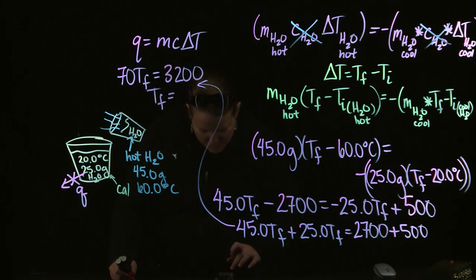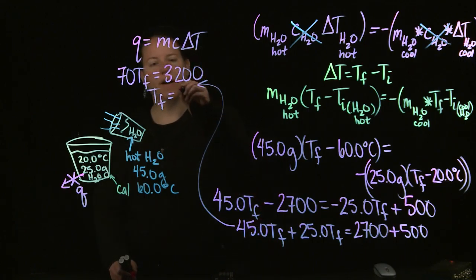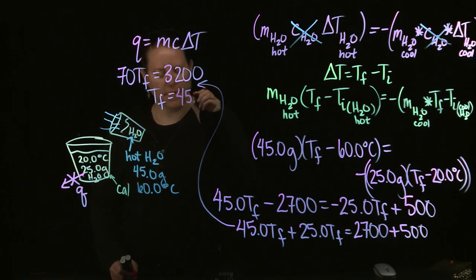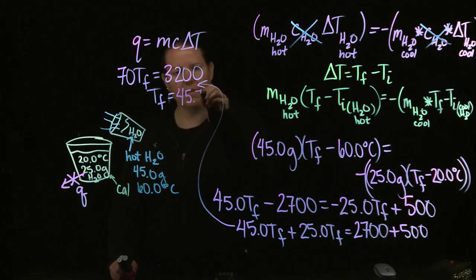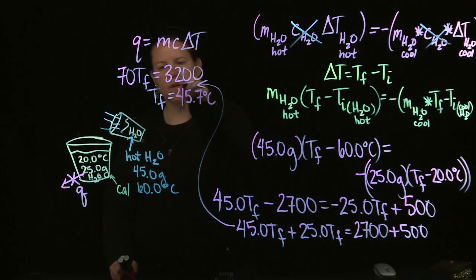And T_final is going to be 3200 divided by 70. Actually I have to put my answer down divided by 70 is 45.7 degrees Celsius.